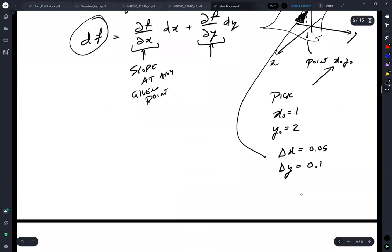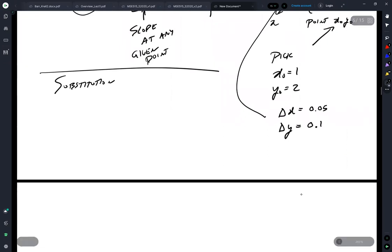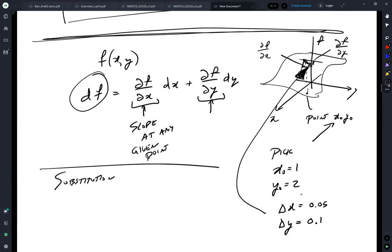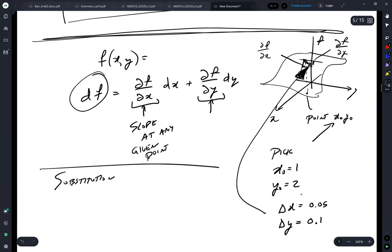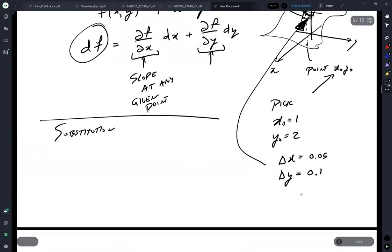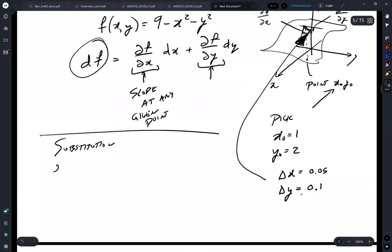Now one thing you could do is you could simply substitute into that function. And if you substitute into the function, well I made up function 9 minus x squared minus y squared. Now you substitute into that, f at 1.05, 2.1 minus f at 1,2, and have that be delta f.